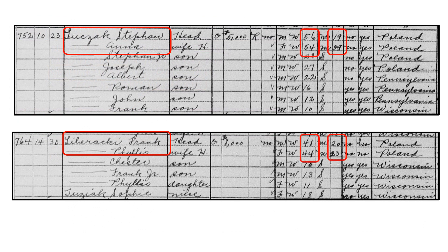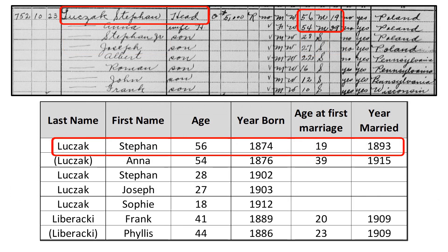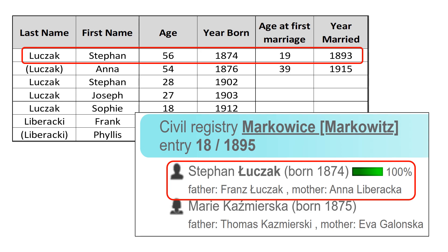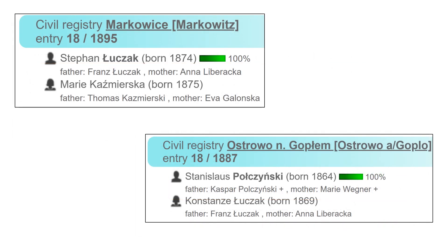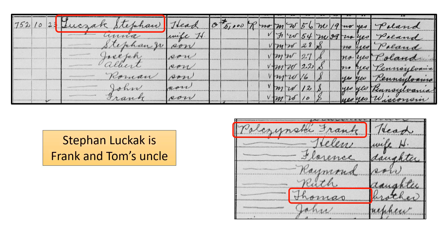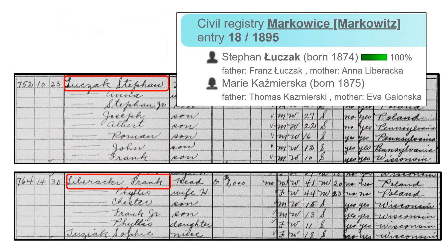Let's extract some age and date information from the census record and see where it takes us. Let's look at Stefan's marriage in 1893. Based on the data for Stefan's wife Anna and Stefan's children, here we must be looking at a second marriage for Stefan. Here we see Stefan's first marriage and that his parents were Franz Luchak and Anna Liberatska. This means that Stefan was Konstanza's younger brother, making Stefan Luchak the uncle of Frank and Tom Polchensky, and all of Stefan's kids the cousins of Frank and Tom and the uncles and aunts of my dad.